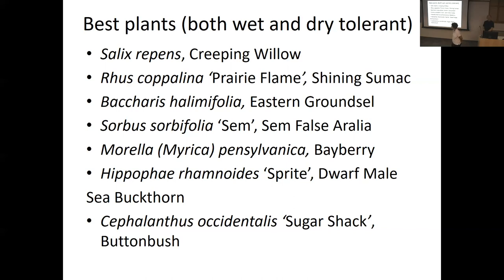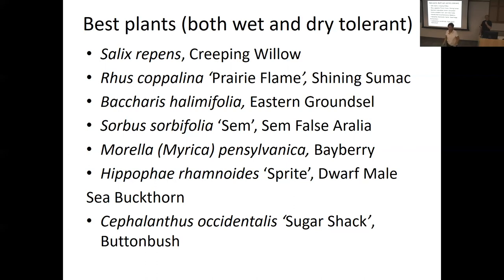Cephalanthus occidentalis is our native buttonbush. It's thought of as a wet, boggy-areas plant, but it also tolerates fairly droughty soil too. Beautiful dark leaves. The straight species can be up to five or six feet tall, but 'Sugar Shack' is a cultivar that has red fruit and is much more compact — much better for our site.